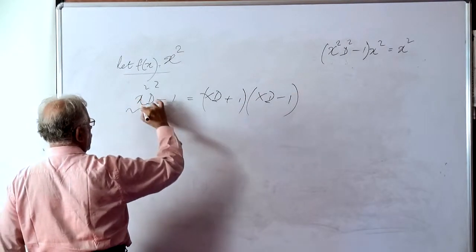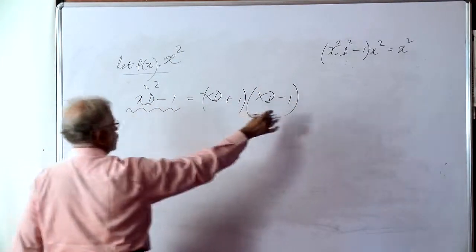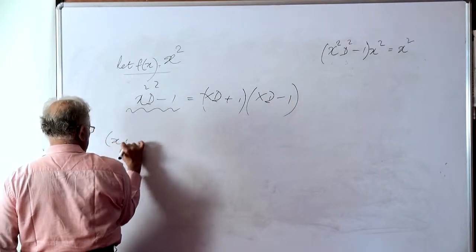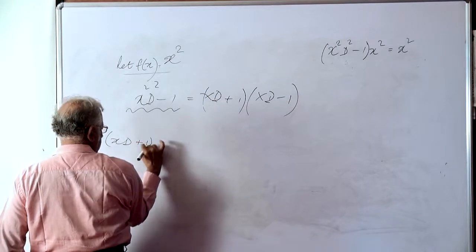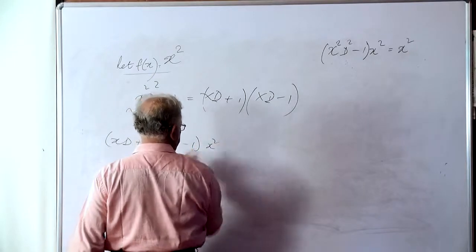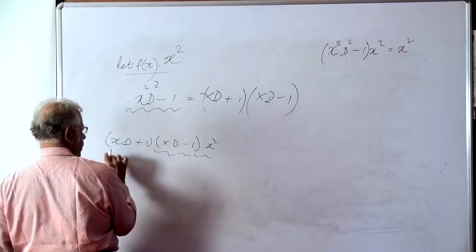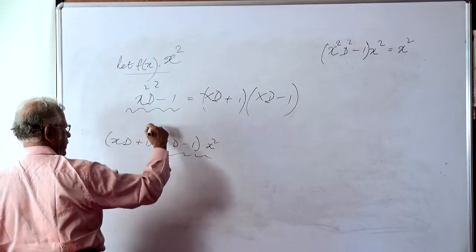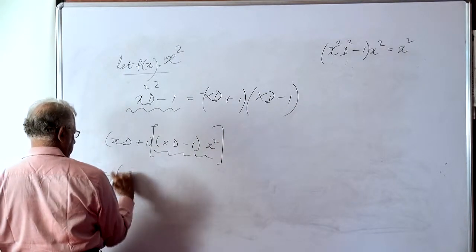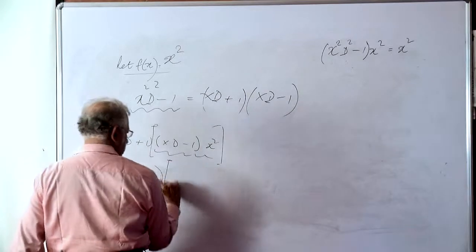Now, we have seen that this operating on x squared led us to x squared. So we will operate x squared with these factors and see what happens. (xd plus 1) into (xd minus 1) operating on x squared. We will do it like this. We will first evaluate this part and then operate xd plus 1 on the result of this. This is equal to xd plus 1 operating on,